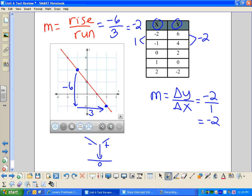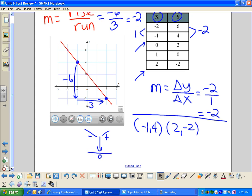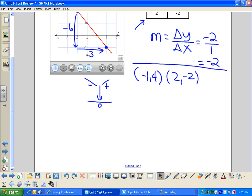The last thing we talked about is how do we figure out what the slope is if we are actually just given two points. We're not given a graph, we're not given a table, we're just given two points. So I'm going to pick any two random points that I happen to know are on this line. I'll pick this point here, 2, negative 2, and I'll pick negative 1, 4 for fun. So I've got negative 1, 4, and 2, negative 2. So we're just given those two points.